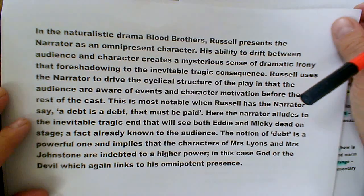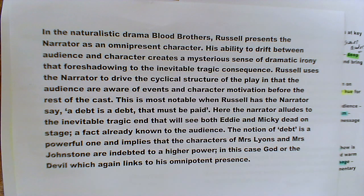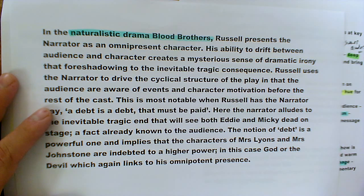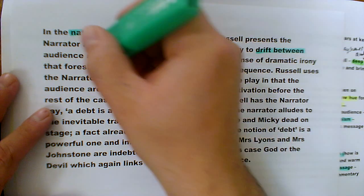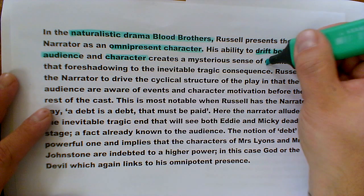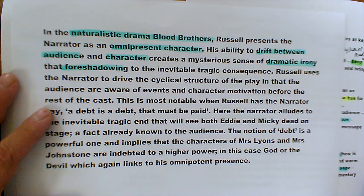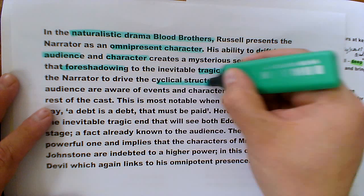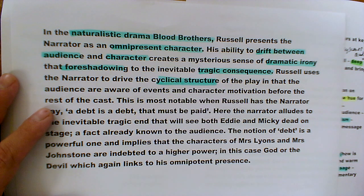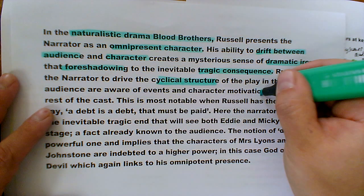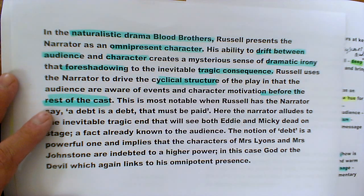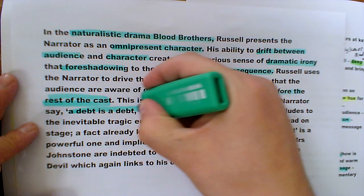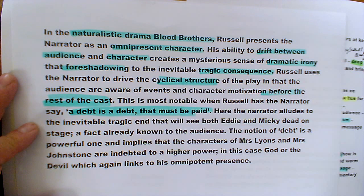Just as an example of how I might take this further, I'll read through an example paragraph and identify some key words. 'In the naturalistic drama Blood Brothers, Russell presents the narrator as an omnipresent character. His ability to drift between the audience and characters creates a mysterious sense of dramatic irony and foreshadowing of the inevitable tragic consequence. Russell uses the narrator to drive the cyclical structure of the play so that the audience are aware of events and character motivation before the rest of the cast.' Remember — the end is at the beginning. Everything needs to link back to a quote — this is absolutely vital.